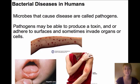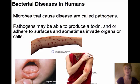We have bacterial diseases — microbes that cause disease are called pathogens. Pathogens produce a toxin and are harmful to whatever organism they're on. Pathogens don't just affect humans; they affect animals and sometimes even plants.